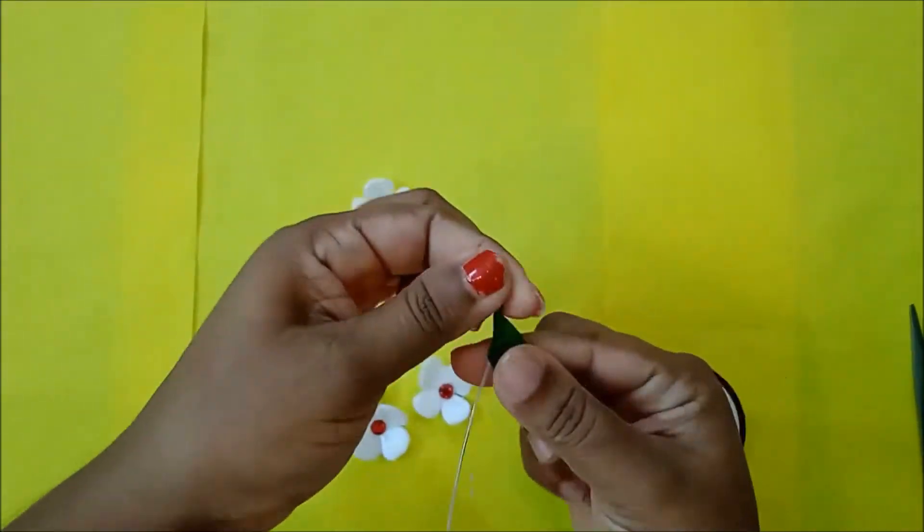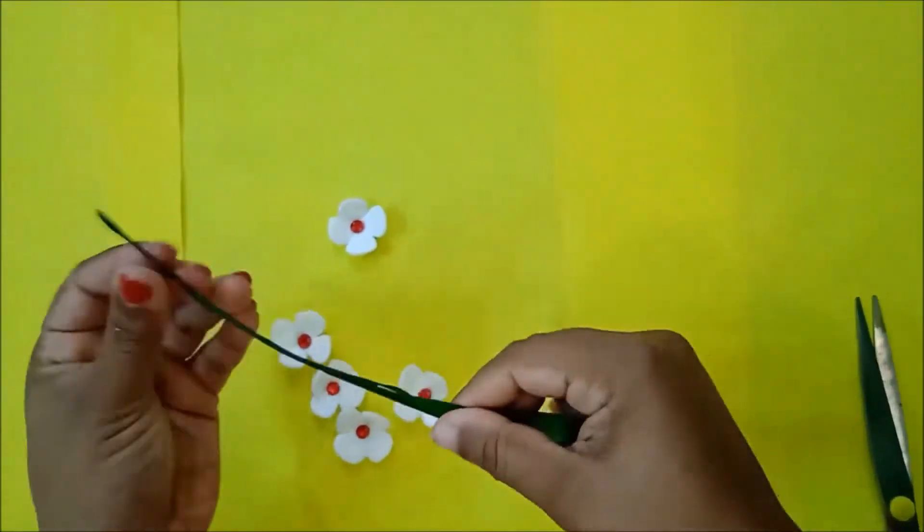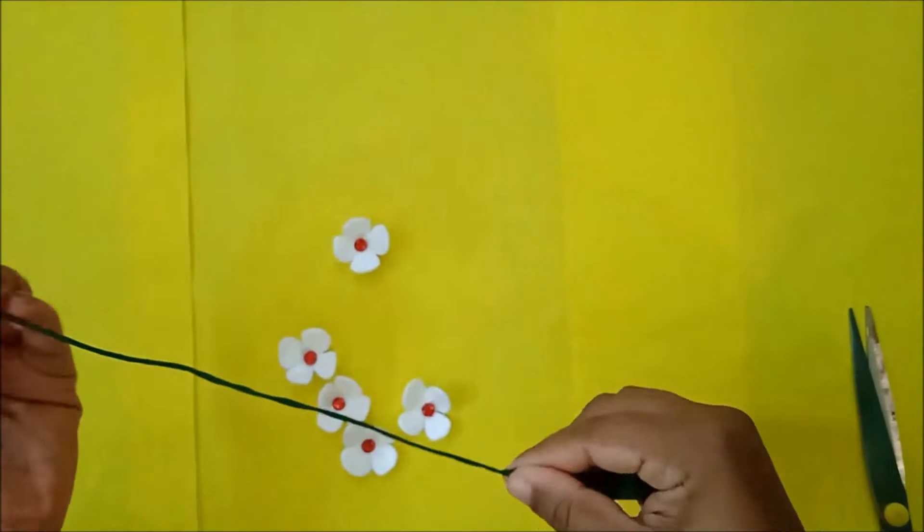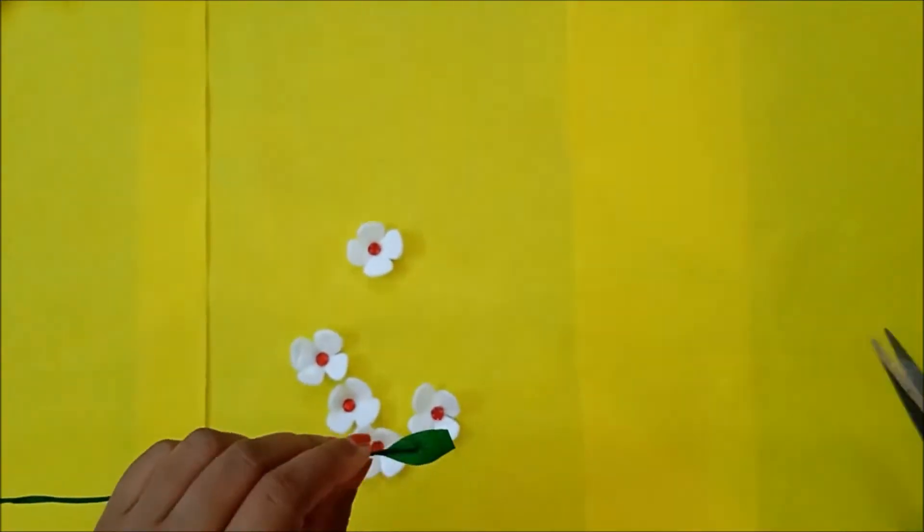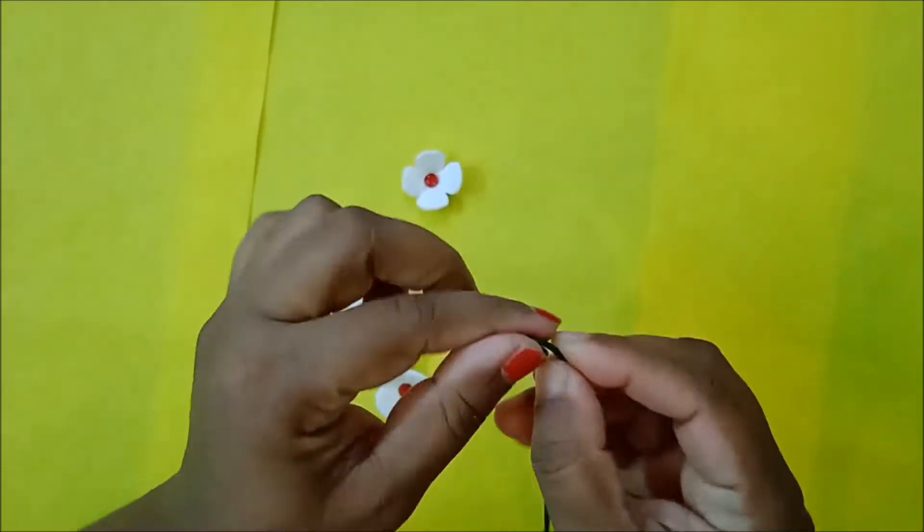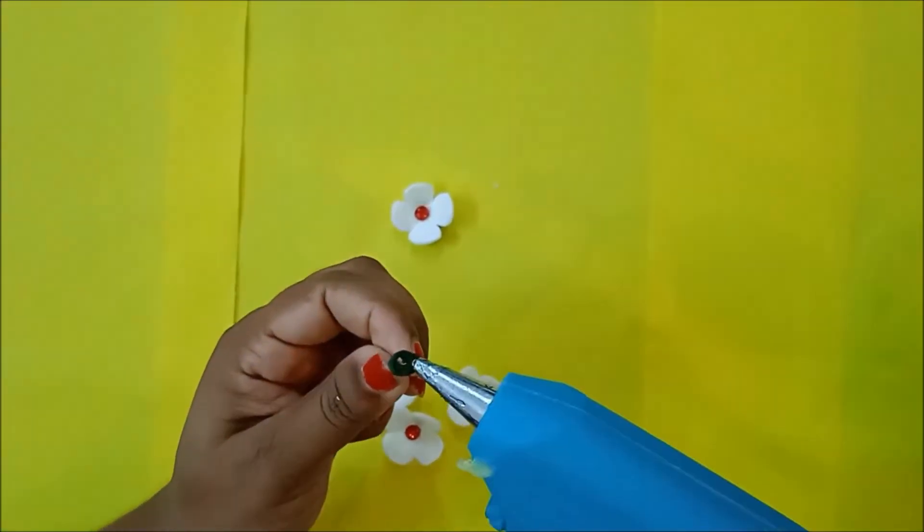Now take the silver wire and wrap the green tape on it. With the glue gun, stick the flowers on the wire.